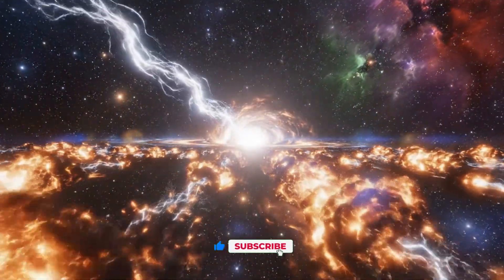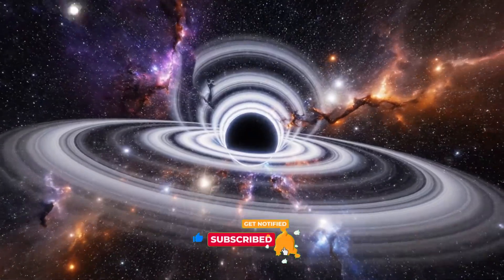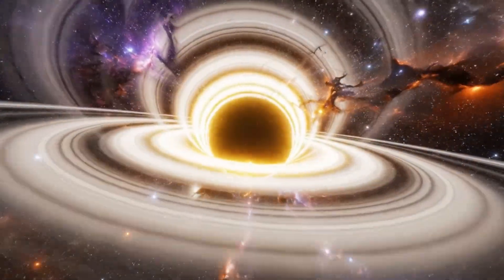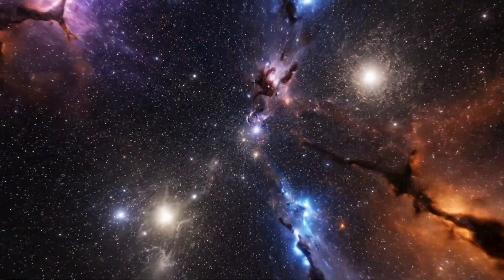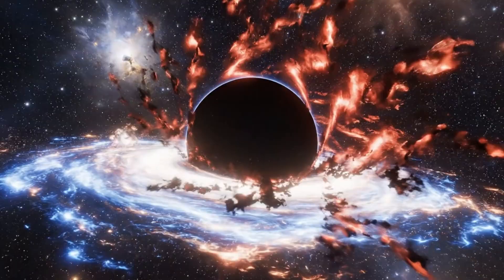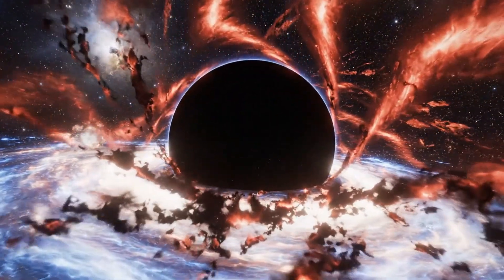The light that left TON 618 began its journey when the universe was less than a quarter of its current age, which means every time we look at it, we are staring directly into the dawn of galactic history, a time when the first structures of the cosmos were only beginning to take shape. And that leads us to a deeper question.